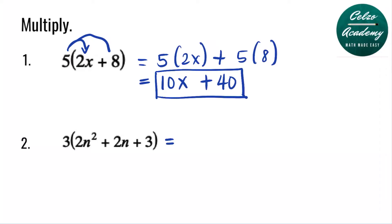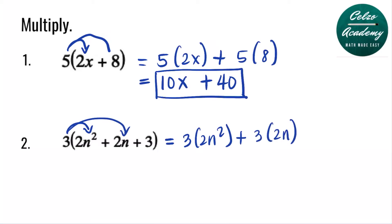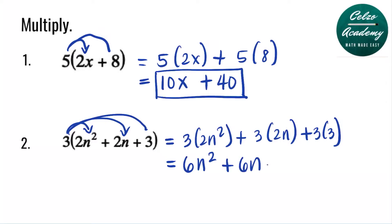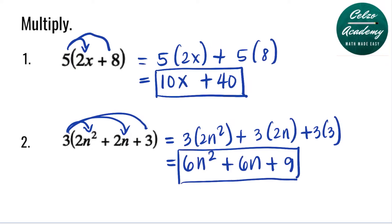Question number 2: 3 times the quantity 2n squared plus 2n plus 3. Using distributive property, we multiply 3 by 2n squared, then 3 times 2n, and then 3 times 3. Simplifying: 3 times 2 is 6, so we have 6n squared. The second term, 3 times 2n is 6n. And the third term, 3 times 3 is 9. So the answer is 6n squared plus 6n plus 9. Always try to arrange the answers in descending order.